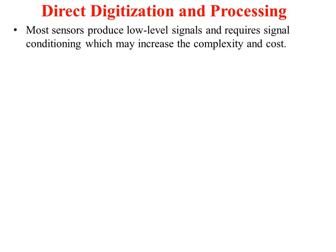Today we are going to discuss about direct digitization and processing. Most sensors produce a low-level signal and require signal conditioning devices, which may increase complexity as well as cost. You take the signal from the sensor, amplify it, condition it, bring it to a certain level, then digitize it and interface it with the processing device. To reduce cost and complexity, sensors which produce direct digitization — devices that give output directly in digital form — are preferred.